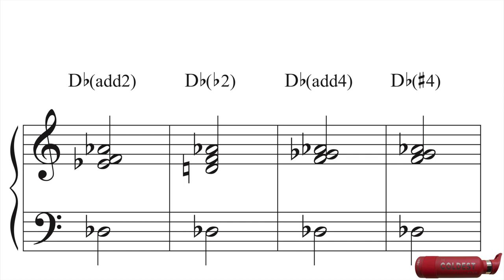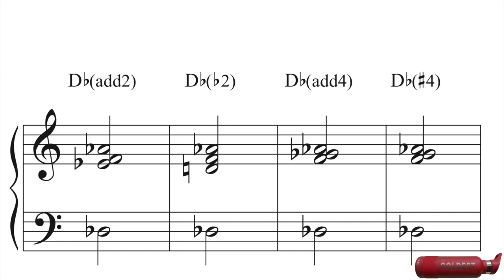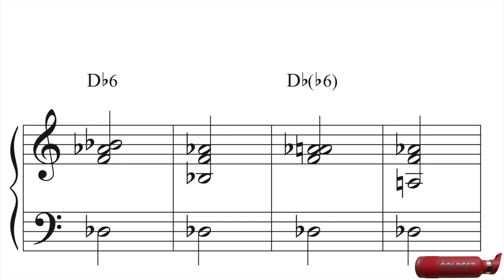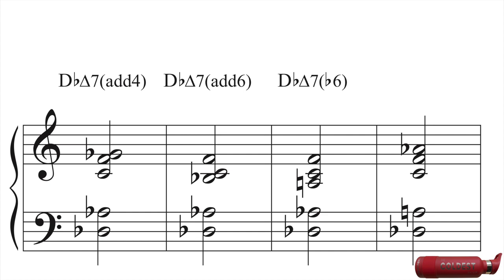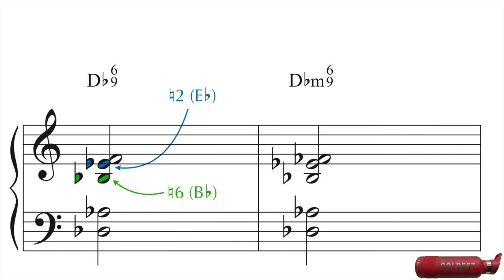Simple added tones are usually added to triads. For example: Db major add 2, Db major flat 2, Db major add 4, Db major sharp 4, Db 6, Db major flat 6. The natural 4, natural 6, and flat 6 can also be added to a 7th chord — for example, Db major 7 add 4, Db major 7 add 6, Db major 7 flat 6. If you add both the natural 2 and natural 6 to a major triad, you get a major 6-9 chord. Similarly, if you add both the natural 2 and natural 6 to a minor triad, you get a minor 6-9 chord.